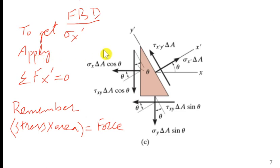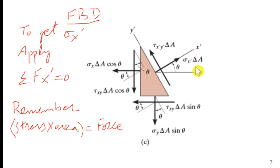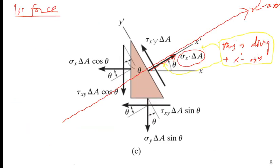To get sigma_x' we apply the free body diagram and set the sum of forces along x' equal to zero. We apply the equilibrium equation of forces, remembering that stress times area equals force. There are five forces having a component along the x'-axis. The first force is sigma_x' times delta A. The second force — with angle theta — contributes a cosine component along x'. The third force contributes a sine component.